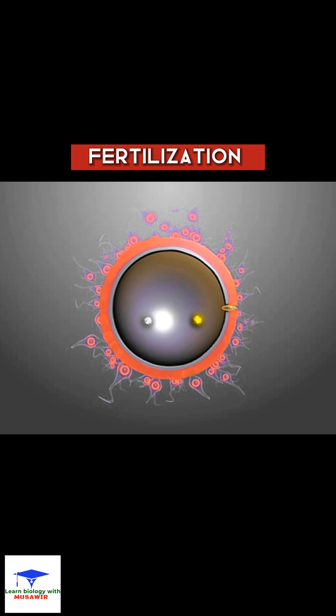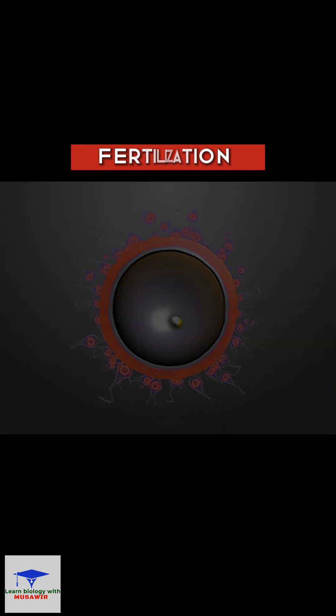The fusion of the plasma membrane takes place, followed by the fusion of the nuclei of the sperm and the egg. The fusion product is known as the zygote.